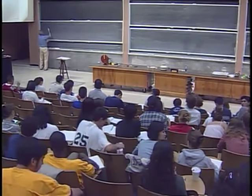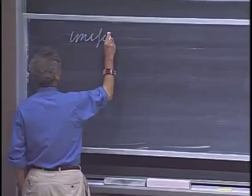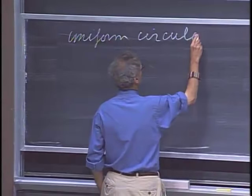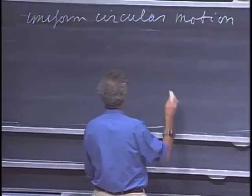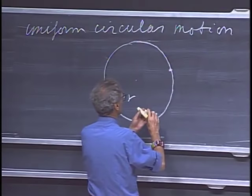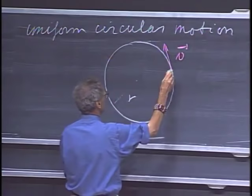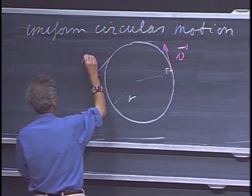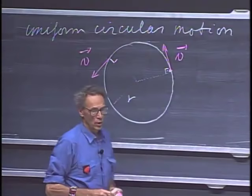Today we will discuss what we call uniform circular motion. An object goes around in a circle with radius r. When the object is here, the velocity is a vector perpendicular to the radius. Later in time, when the object is here, the velocity has changed, but the speed has not changed.